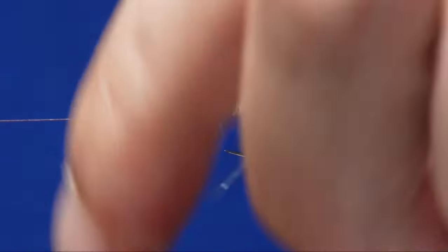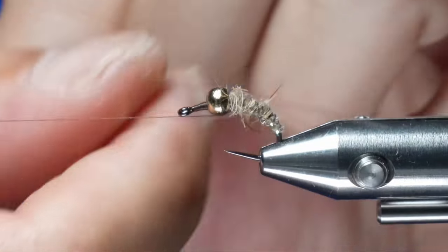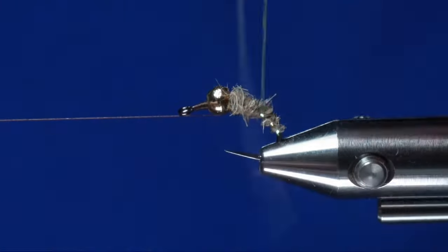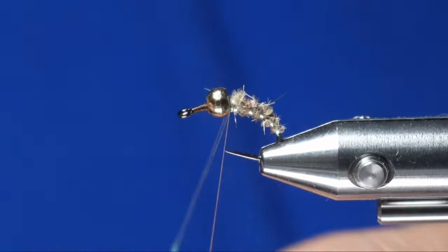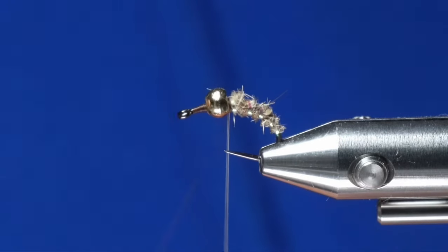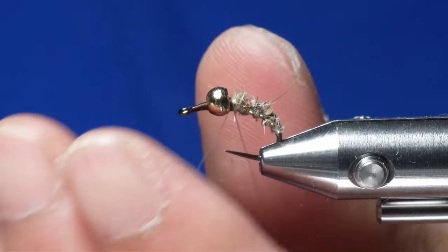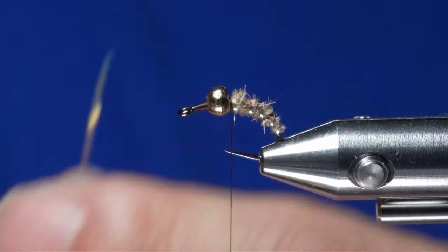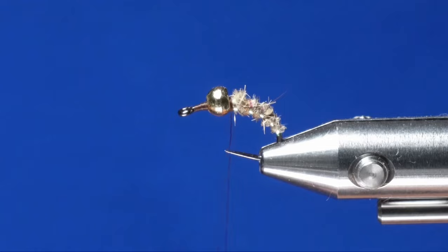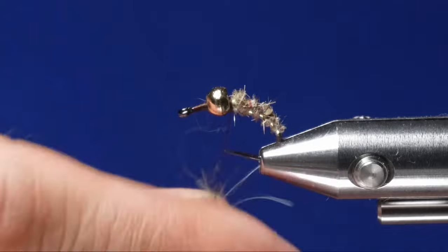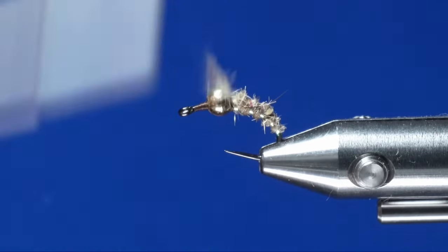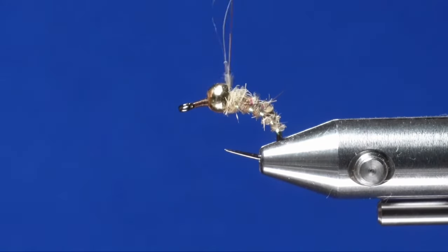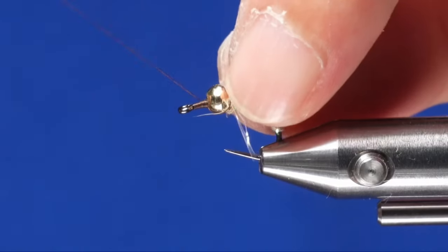Now take the flashaboo and wrap it up to the bead and then tie off the ribbing. Then trim off the excess. I'm going to add just a little bit more dubbing behind this bead here, and then I'm going to hop it back in front of the bead again.